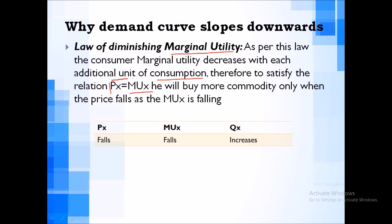The normal equilibrium condition is that Px must equal MUx. If MUx falls, then Px falls, and ultimately if Px falls, then Qx will increase. So the first and foremost reason why the demand curve slopes downward is the Law of Diminishing Marginal Utility.